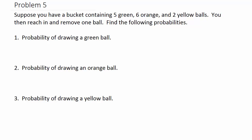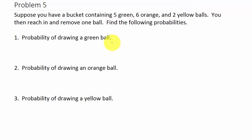Suppose you have a bucket containing five green, six orange, and two yellow balls. You reach in and remove one ball — find the following probabilities. Since we have the counts given directly, we don't really need to write out the full sample space.